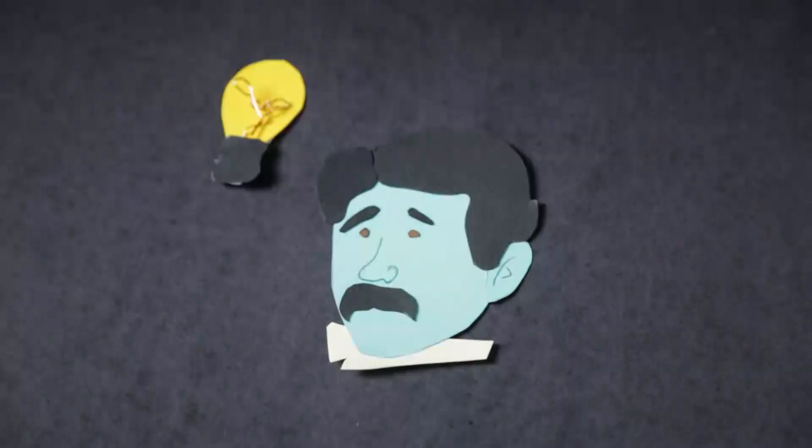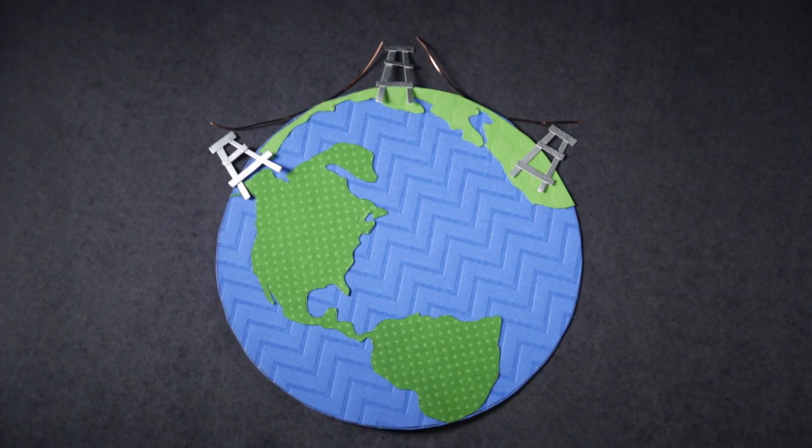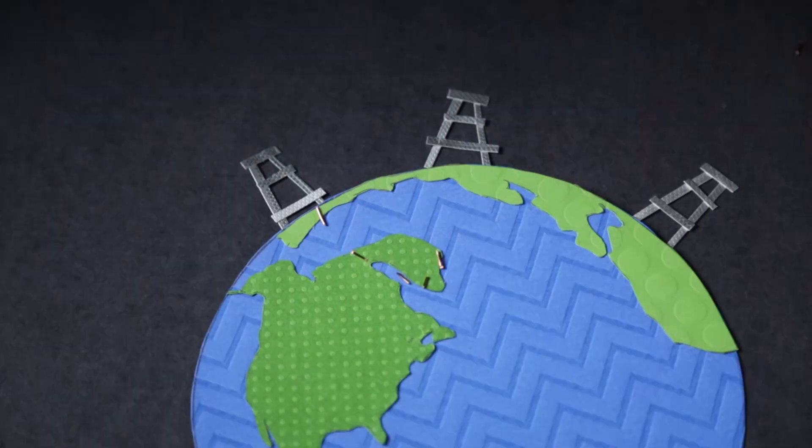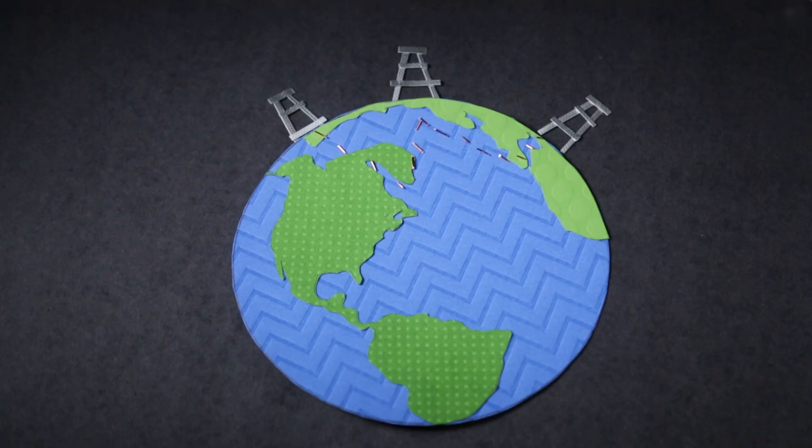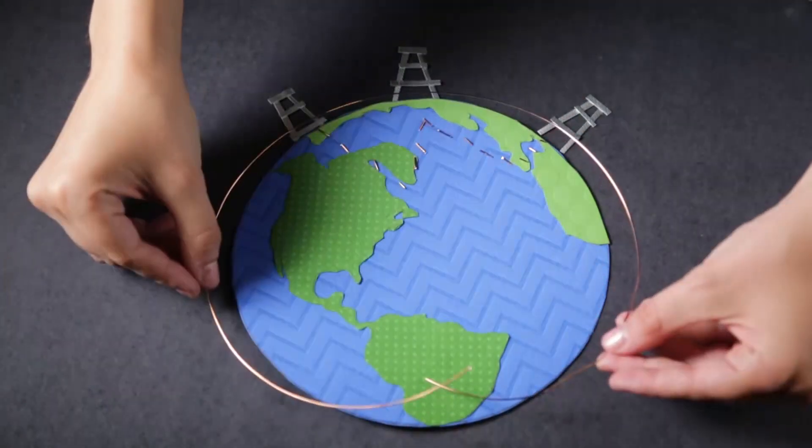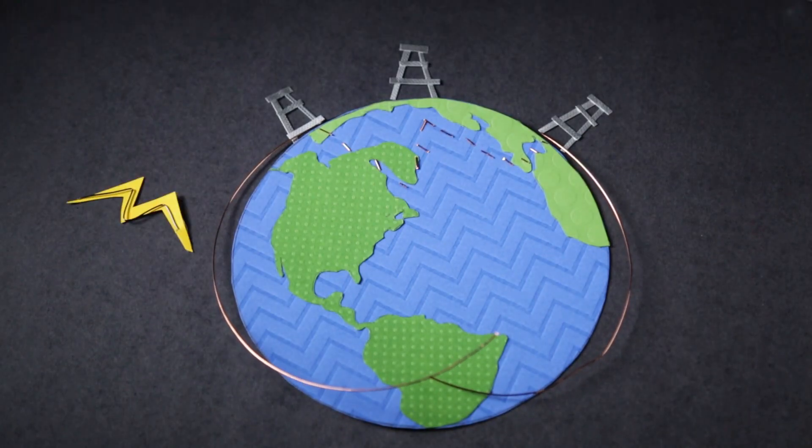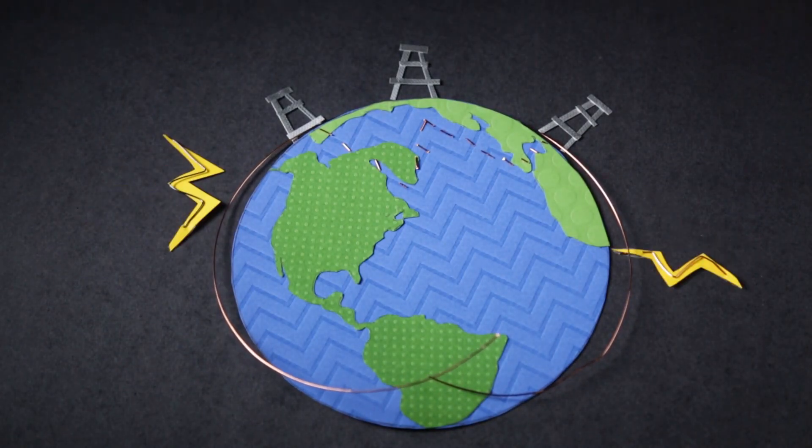Tesla had an idea. Rather than sending electricity through wires, we could send it through the Earth. If the electric current matched the Earth's resonant frequency, the Earth would act as a conductor, essentially a giant global wire.